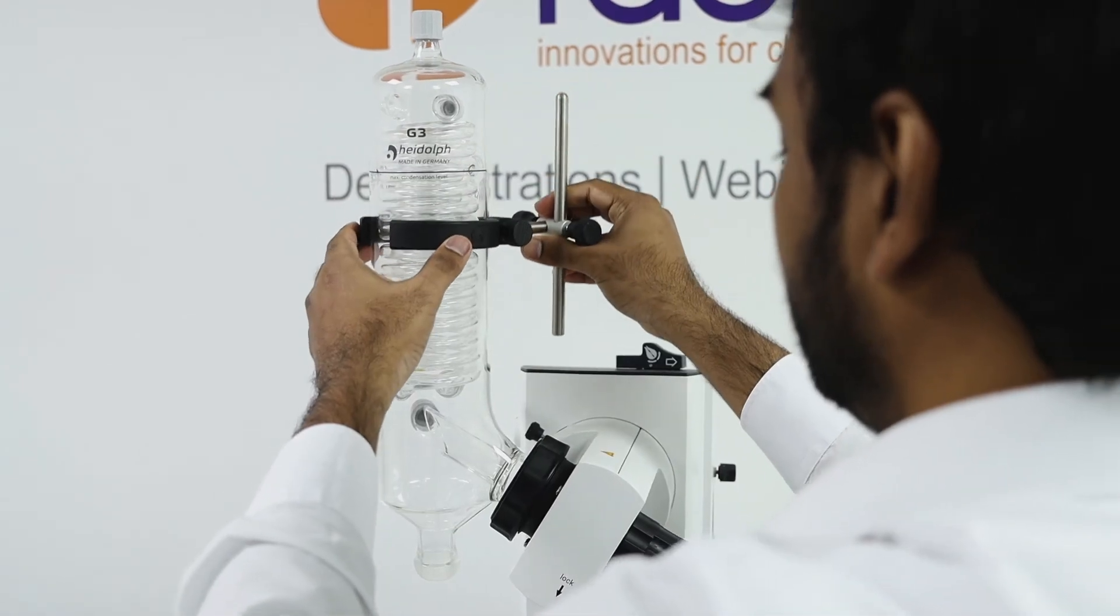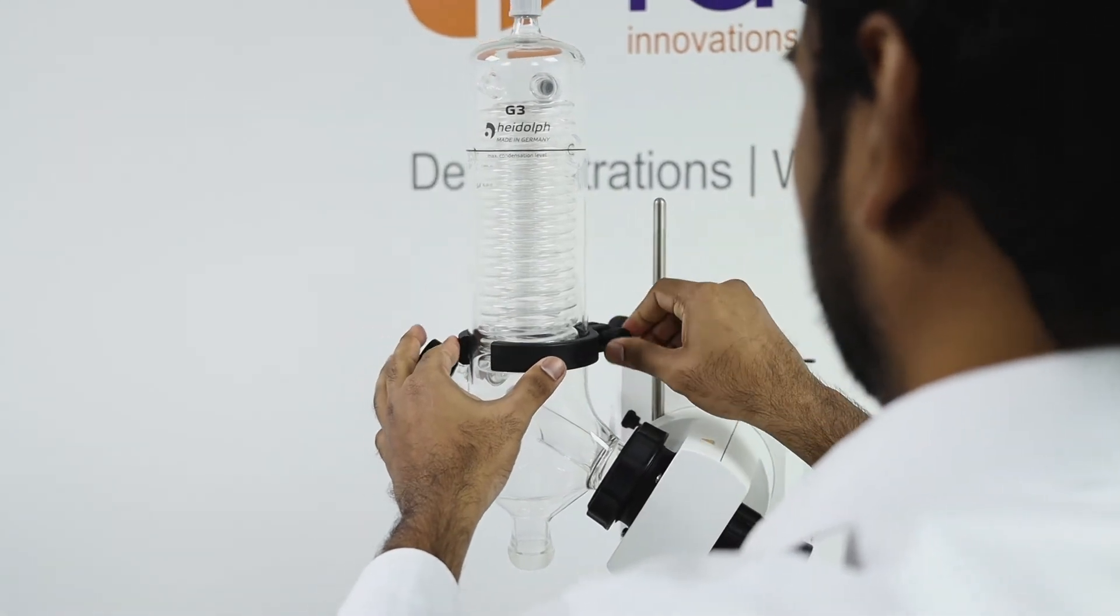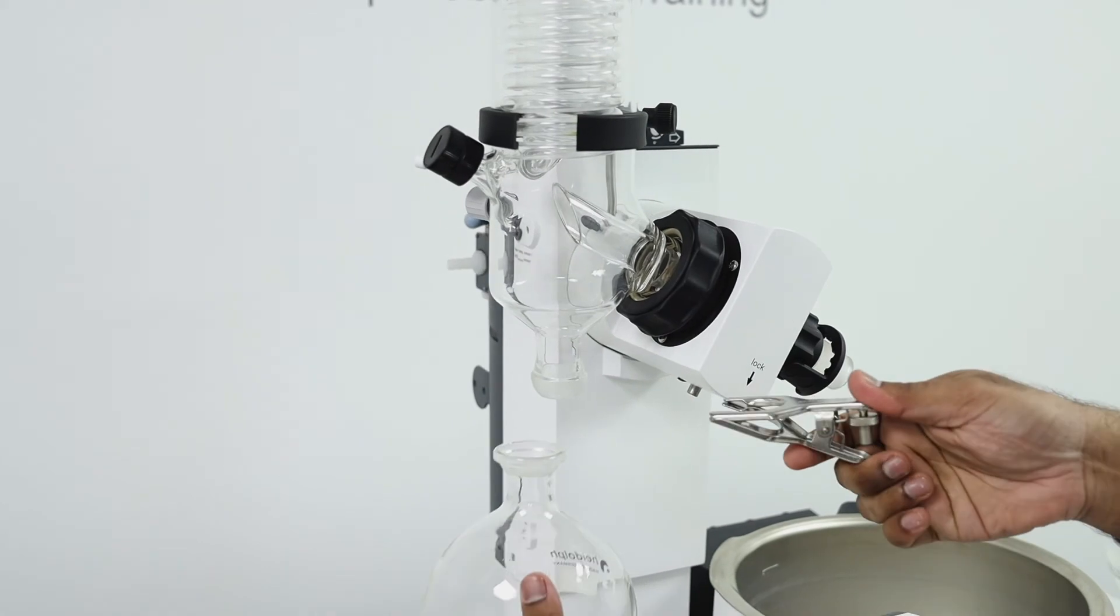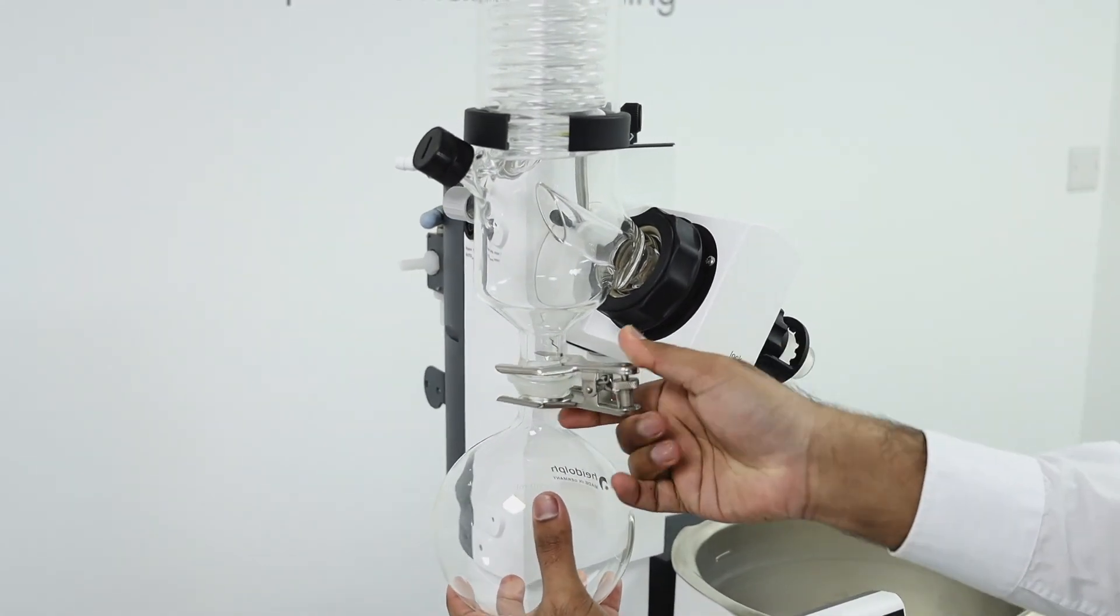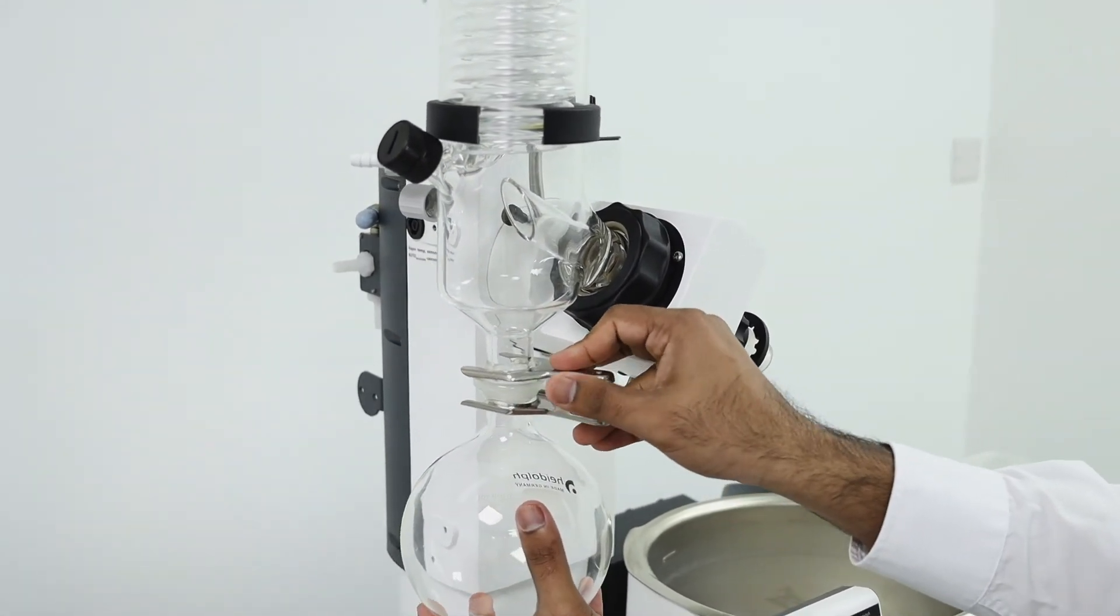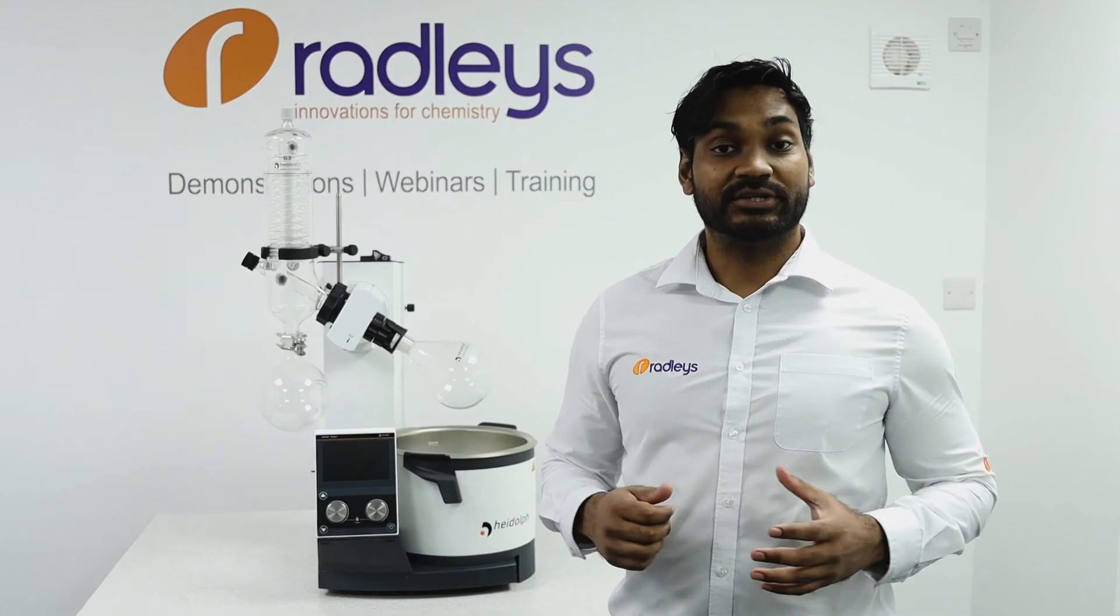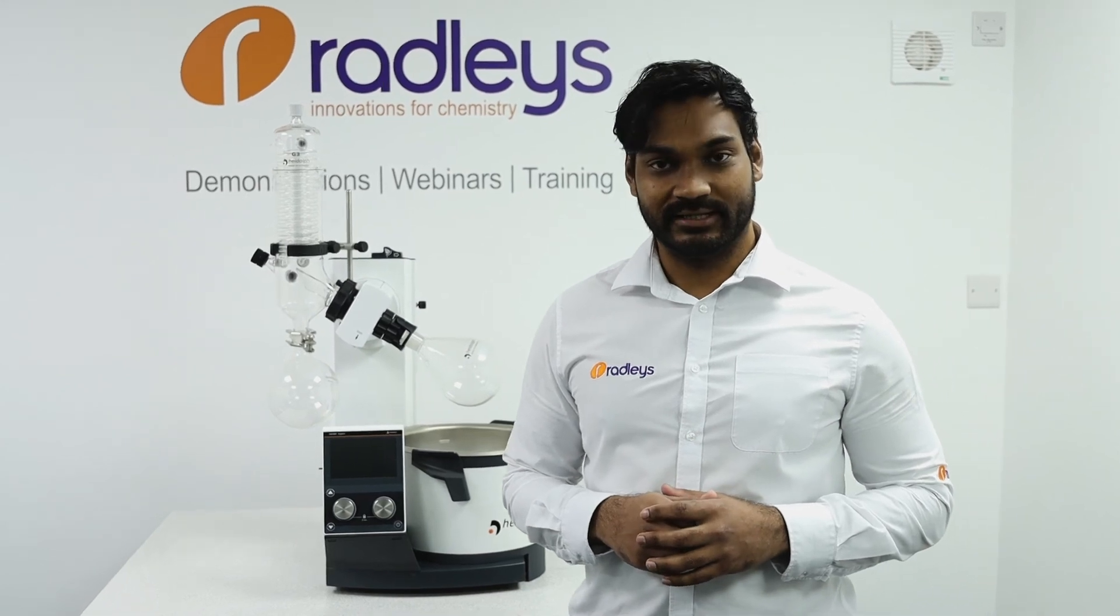Then replace your securing rod and tighten up the clamps. Now you can replace your collection flask and finally reattach the evaporating flask. Now your system is ready to perform evaporations again.